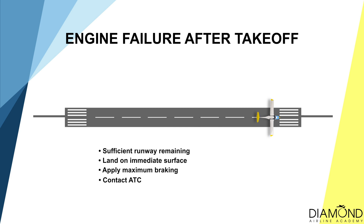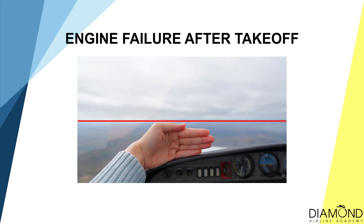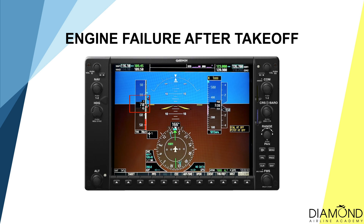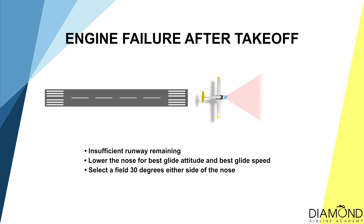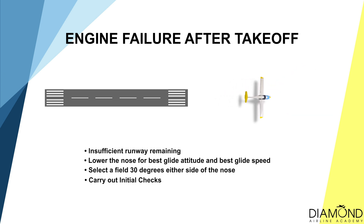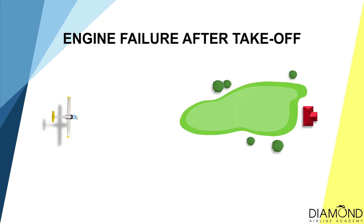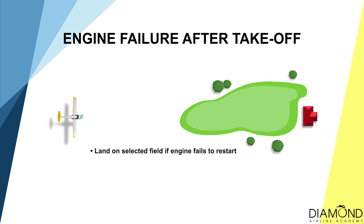Contact the tower at the end to let them know we are aborting the take-off. If the engine failure occurred when the aircraft has rotated and become airborne, and the runway remaining is not enough for a safe return, the first course of action is to lower the nose for best glide attitude and glide speed. The best glide attitude is roughly 5 inches, and the glide speed is 70 knots with 2 people on board. After that, pick an open field 30 degrees either side of the nose to conduct an emergency landing. If time permits, conduct the initial checks for engine restart — switching the fuel tank, switching the fuel pump on, and switching the magnetos in an attempt to restart the engine. If the restart is unsuccessful, we have to commit to land at the field that was chosen.